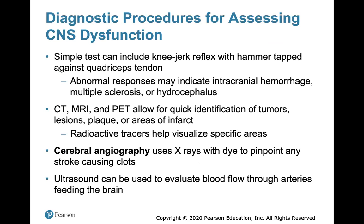Diagnostic procedures for assessing central nervous system dysfunction include simple tests like the knee-jerk reflex with a hammer tapped against the quadriceps tendon — an abnormal response could indicate intracranial hemorrhage, multiple sclerosis, or hydrocephalus. CT, MRI, and PET scans are also important for quick identification of tumors, lesions, plaque, or areas of infarct. Cerebral angiography uses X-rays with dye to pinpoint any stroke-causing clots, and ultrasound can be used to evaluate blood flow through the arteries feeding the brain.